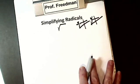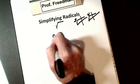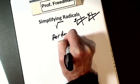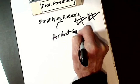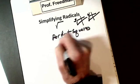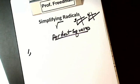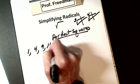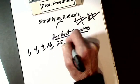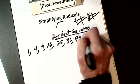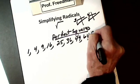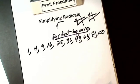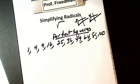So first thing you have to know are your perfect squares. A perfect square is a number multiplied by itself. So I start with 1: 1 times 1, 2 times 2, 3 times 3, 4 times 4, 5 times 5, 6 times 6, 7 times 7, 8 times 8, 9 times 9, 10 times 10. You have to be able to recognize your perfect squares from 1 to 100. I can take the square root of any of them evenly.